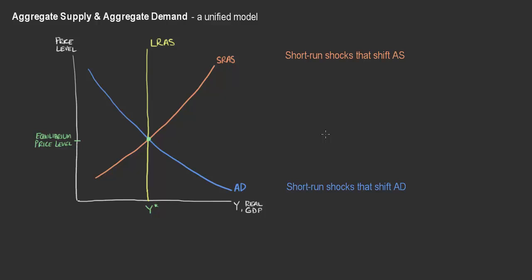Before we get into that, let's quickly summarize the difference between aggregate supply and aggregate demand. Aggregate supply is the quantity of goods and services — real GDP — that firms will choose to produce at various price levels. Whereas aggregate demand is the quantity of goods and services, real GDP, that is demanded by consumers, firms, the government, and foreign entities at various price levels. Understanding these definitions helps clarify what's actually going on with these curves and what might cause shocks.